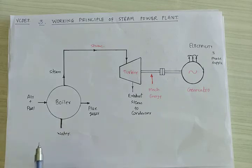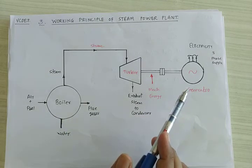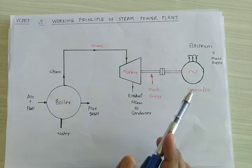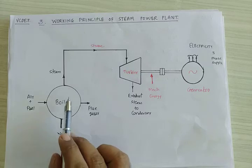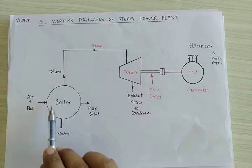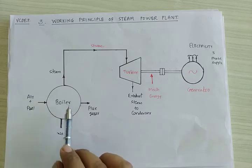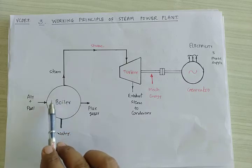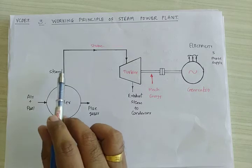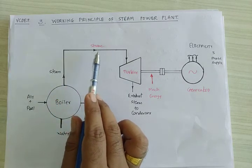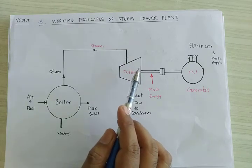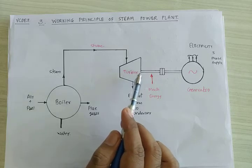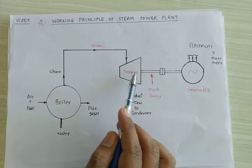This is the block diagram of the working principle of the steam power plant. It shows major components like boiler, turbine, and a generator which works on the principle of electromagnetic induction. Here, the feed water comes into the boiler. Air-fuel mixture is present, and fuel gases leave from one side. The water inside the boiler tubes gets converted into superheated steam.